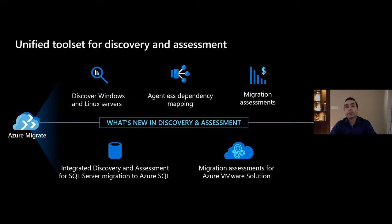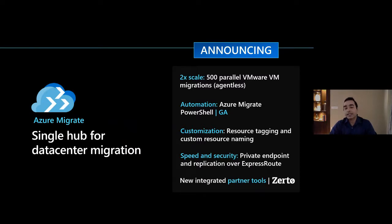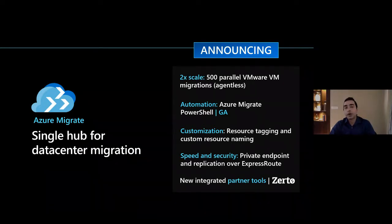We are also announcing general availability for migration assessments for Azure VMware Solutions. Azure Migrate is our single hub for data center migration. Announcing at Ignite, we've increased our scale for parallel VMware VM migrations to 500 VMs. We've announced general availability of Azure Migration PowerShell — a great way to automate scale migration projects and enable your migration factory, with sample migration factory scripts available on GitHub. You can also customize VM migration flows with resource tagging and custom naming conventions. We've invested in speed and security with private endpoint support and replication over ExpressRoute.